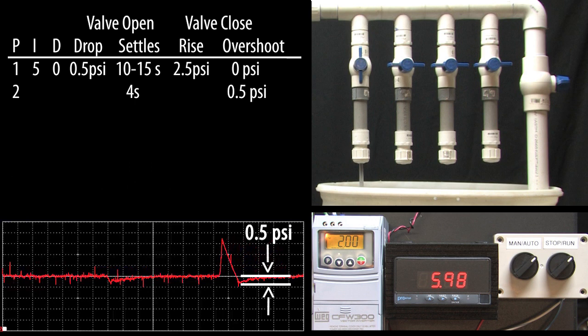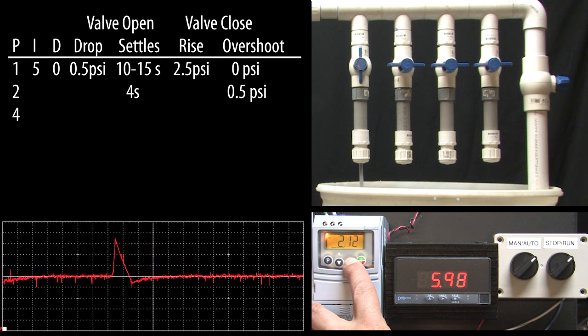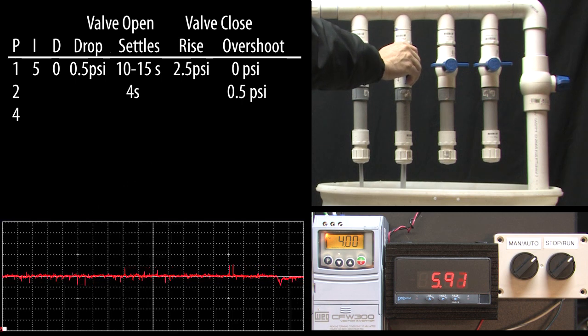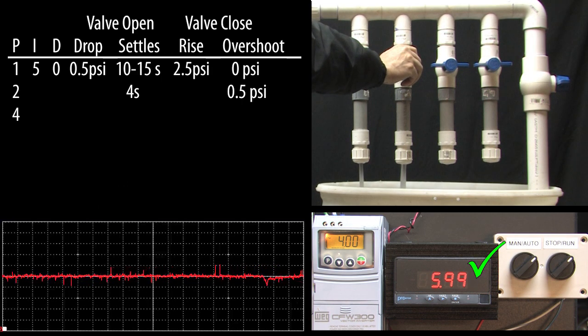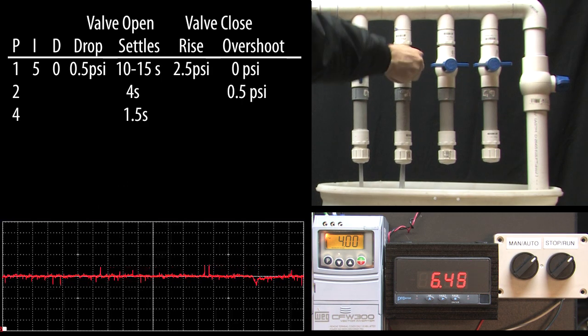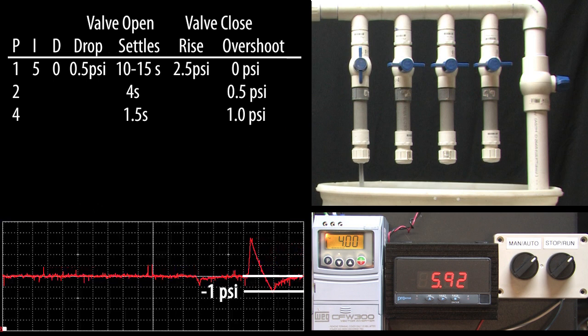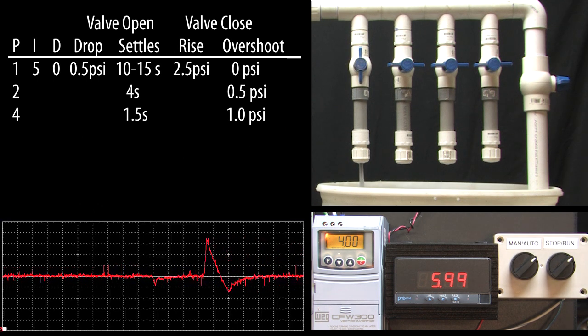Interesting. Let's double P again to 4 and open a valve. Wow! The valve opening recovers in only one and a half seconds. But the valve closing is now overshooting the 6 psi goal by over 1 psi so it's taking even longer to recover. If you don't have abrupt valve closings then this won't be an issue and a P of 4 might work great for you.